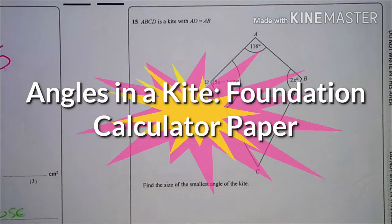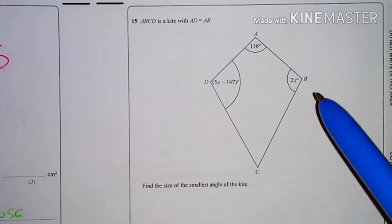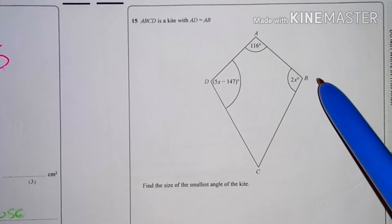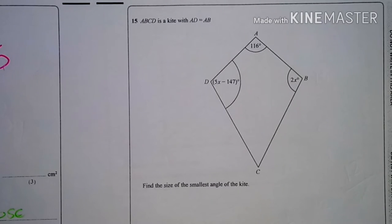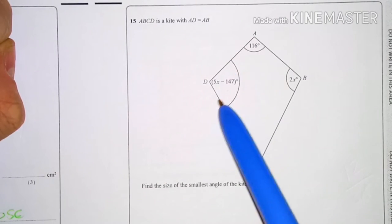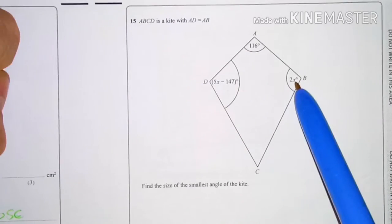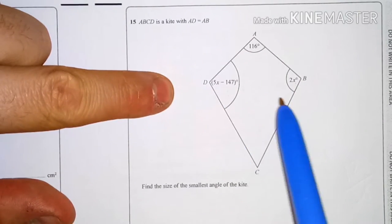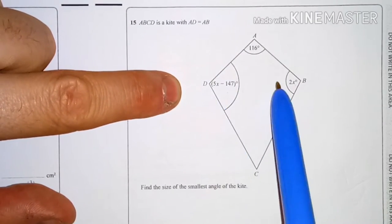ABCD is a kite where AD equals AB. Find the size of the smallest angle of the kite. To do this, we have to think about the properties of a kite. Even though this has a bigger segment, it doesn't mean these two are different. In fact, the properties of the kite mean that these two angles are the same.